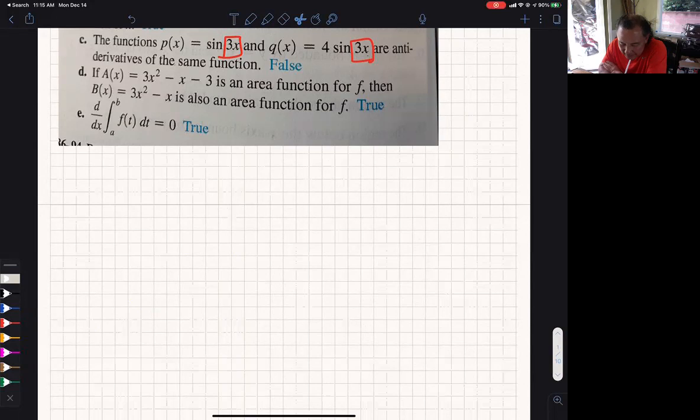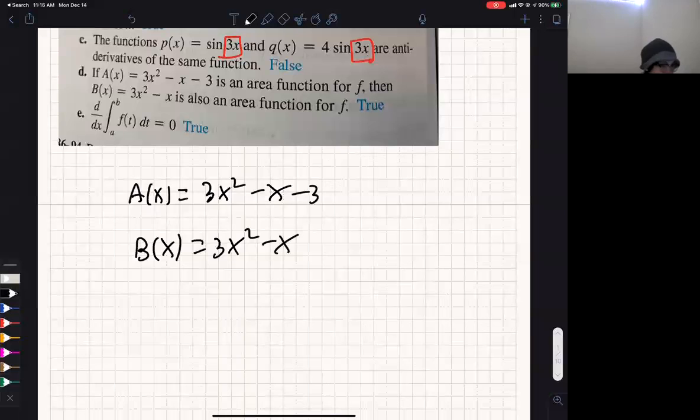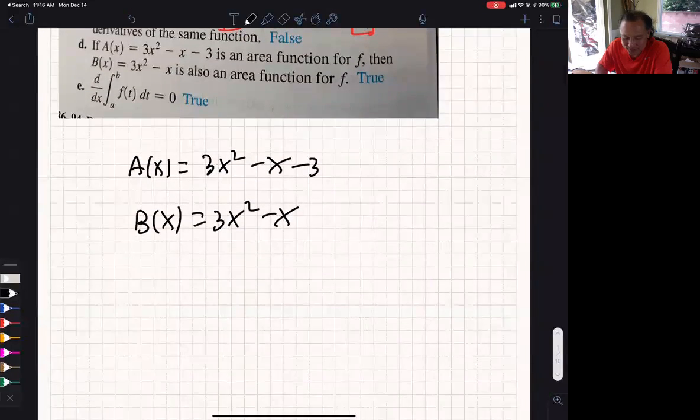Part D. A(x) is that 3x squared minus x minus 3 is an area function for f. Then B(x) is also an area function for f. Okay. I thought we lost somebody. There we go. Did I stop recording? Oh, this is all one problem. Okay. I'm going to have weird talking in the middle of this problem.